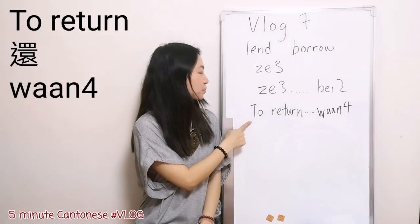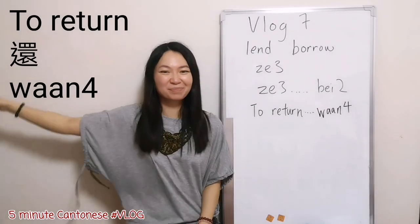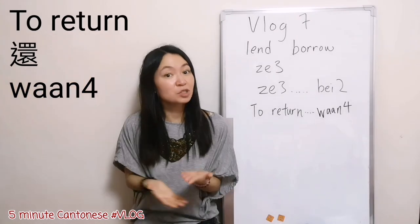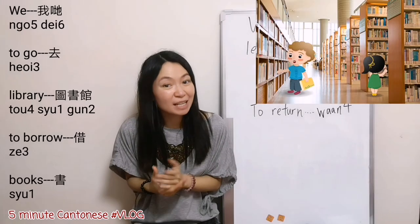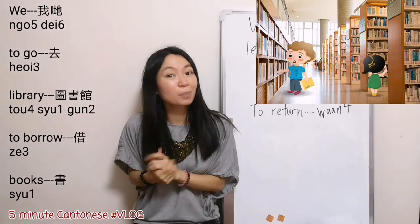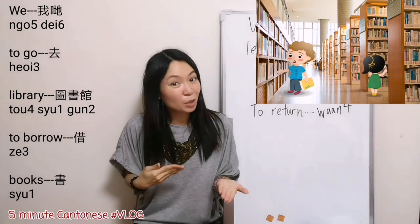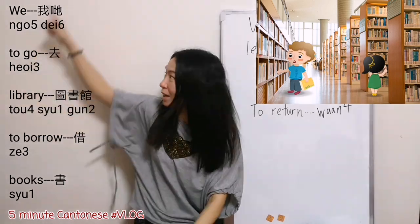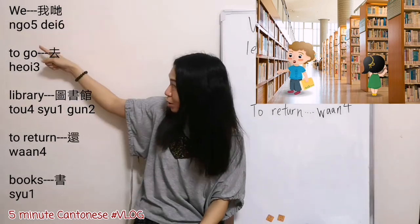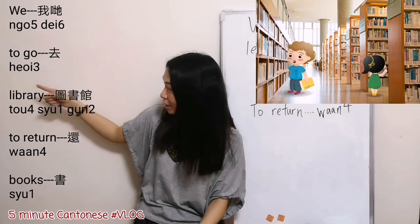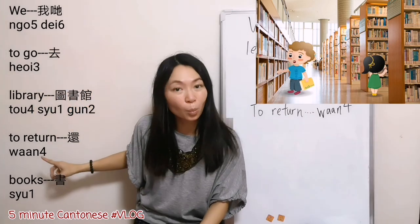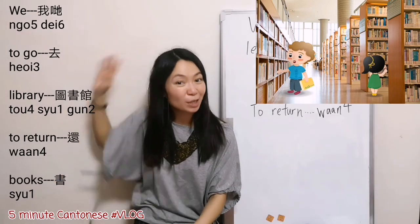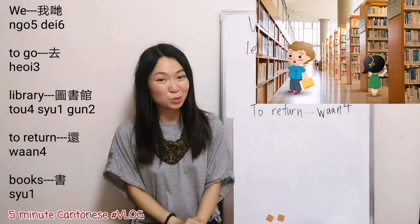On the contrary, to return — 還. So, 我地去圖書館借書 — we go to library to borrow some books. Now I go to return: same structure, just change the verb. 我地去圖書館, 還, to return, 還, and then 書. 我地去圖書館還書.